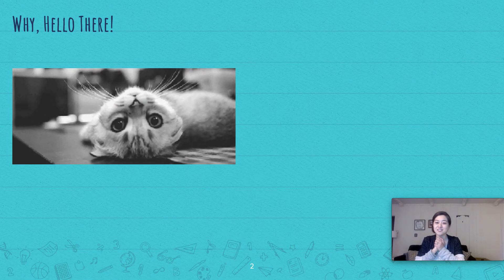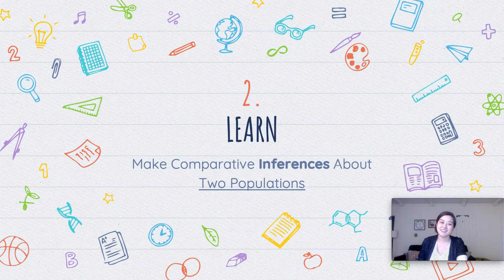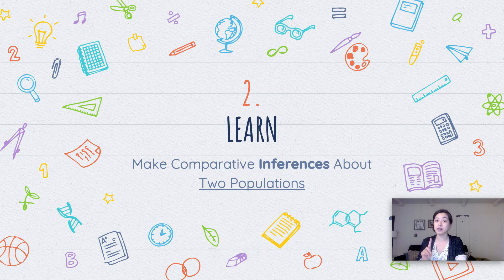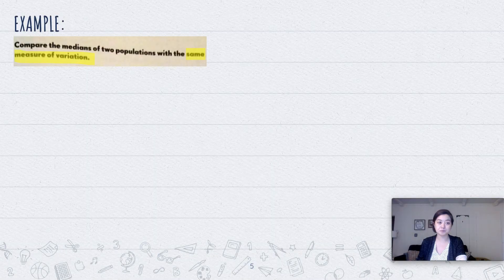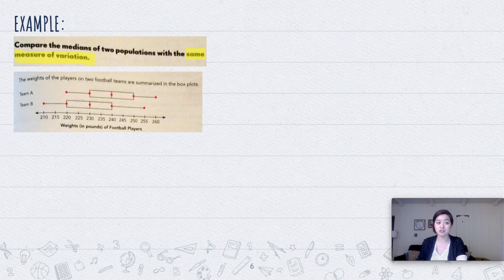Hello, seventh grade. We've been learning about how to make inferences with just one population. Now we're going to make inferences about two populations. Let's take a look at this example: compare the medians of two populations with the same measure of variation.